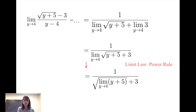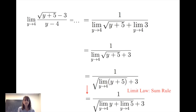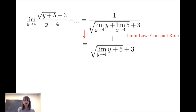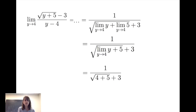I apply the power rule to the square root, giving one divided by the square root of the limit of y plus five plus three. Since y plus five is a sum, I apply the sum rule, then the constant rule for the limit of five. This gives one divided by the square root of the limit of y as y gets close to four, plus five, plus three. The limit of y as y gets close to four is four, so I get one divided by the square root of four plus five plus three, which finally gives us one sixth.